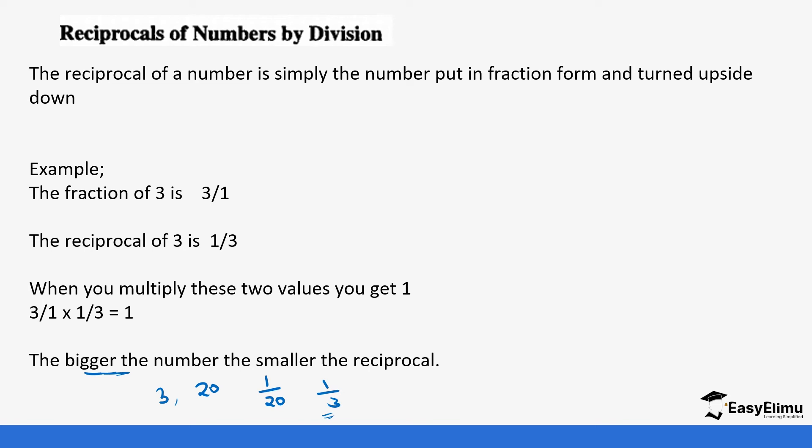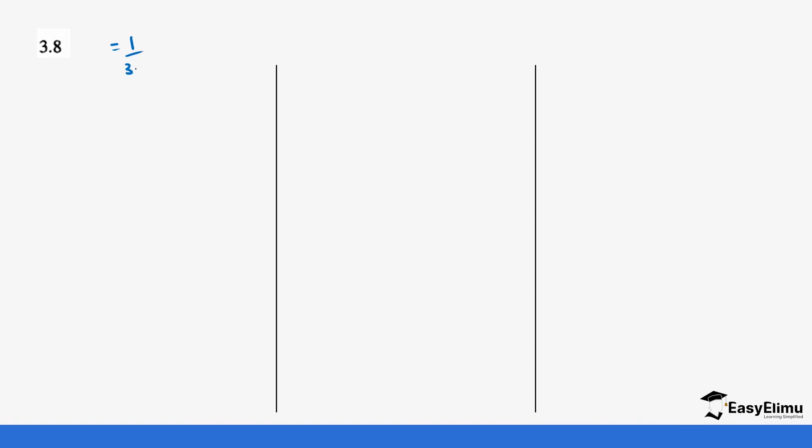How do we calculate the reciprocals of numbers by division? The first step is to convert our values into a fraction and then introduce the division method. For example, 3.8 is a decimal number with one decimal place. The reciprocal of 3.8 is 1 over 3.8.